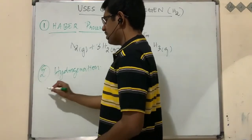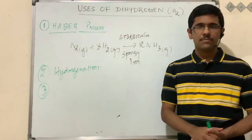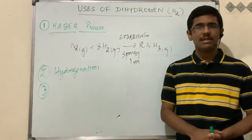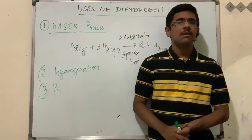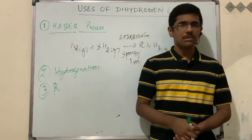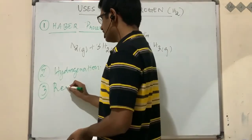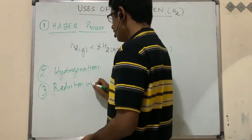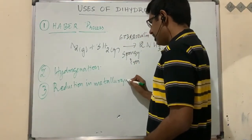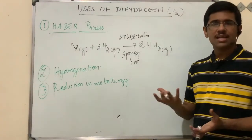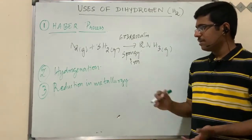The third use is reduction — obtaining an element from its oxide by reacting with hydrogen gas. We have studied the reduction of palladium(II) ion to palladium using hydrogen gas. This reduction process in metallurgy — the scientific principles regarding extraction of metals from their ores profitably — can make use of hydrogen gas.